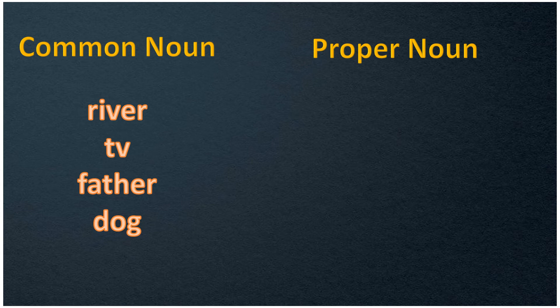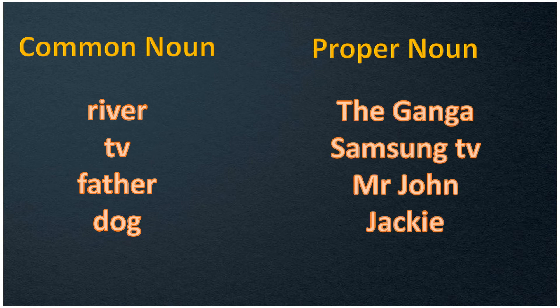Children, now let's take some more examples and find the proper nouns. I have written some common nouns here: river, TV, father and dog. We will give some specific names to these common nouns. The name of a river — the Ganga. For TV, a specific name — Samsung TV. For father — Mr. John. And for dog, I have given the specific name Jackie.